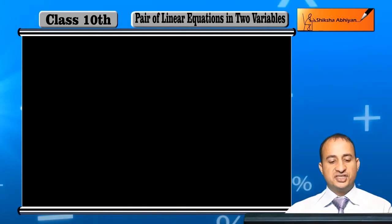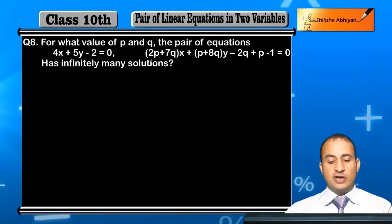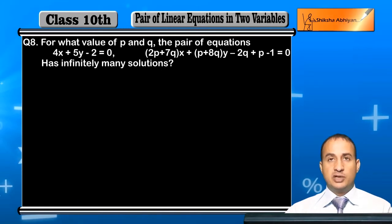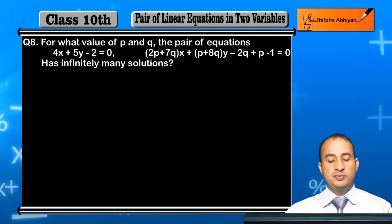Now students, see the question. Question is 8. For what value of p and q, the pair of equations 4x plus 5y minus 2 equal to 0 and (2p+7q)x plus (p+8q)y minus 2q plus p minus 1 equal to 0. These are two equations.